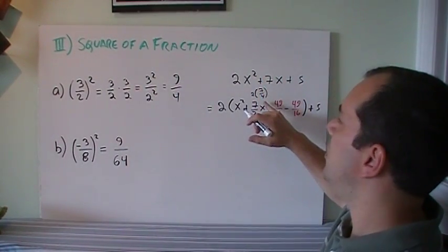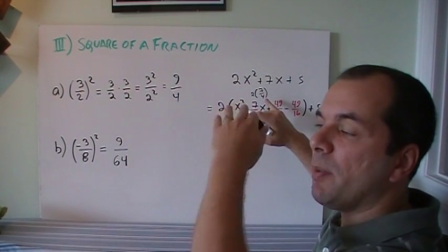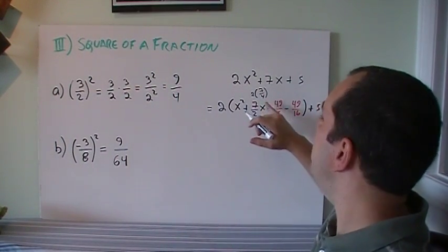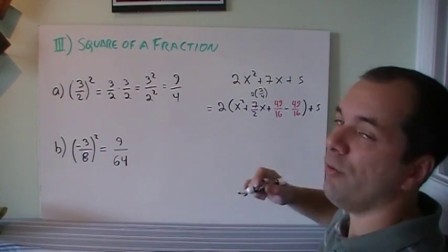So we can do that in one step real easily. So what is the number that I need to add? Well, if I've got 7/4 on the top and 7/4 on the bottom, the square is (7/4)², which is 49/16.